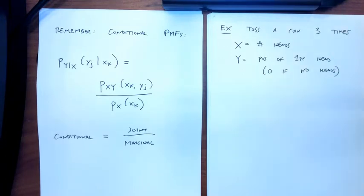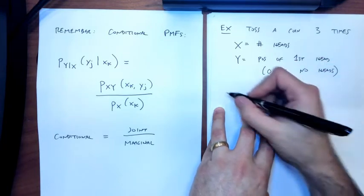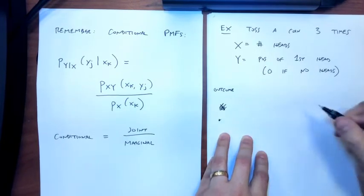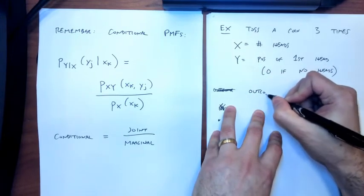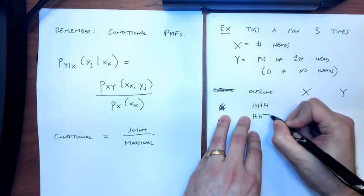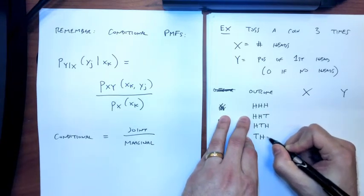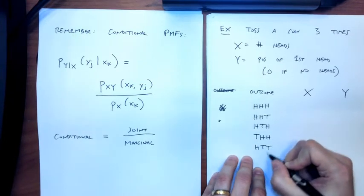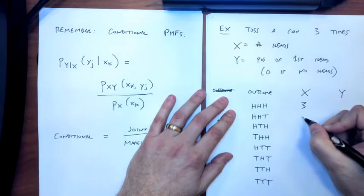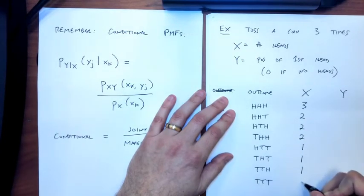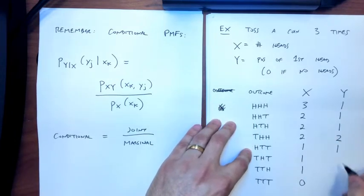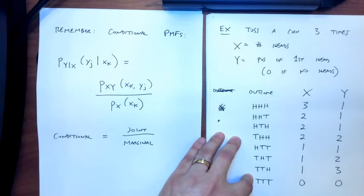We can make a table of outcomes with X and Y. There are eight equally likely outcomes, each with probability 1/8. X is the number of heads — easy to fill in. Y is the position of the first head: for example, TTT gives Y=0, HTT gives Y=1, THT gives Y=2, TTH gives Y=3, and so on.